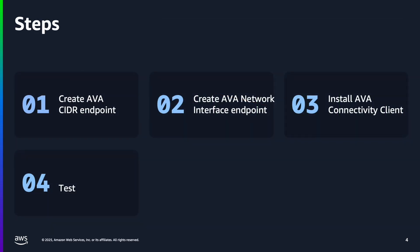This is an overview of the steps. The first step is to create the AWS Verified Access, or AVA, endpoint. You can choose to use the CIDR range endpoint, or the network interface endpoint, or both. After the endpoints are configured, you then download the Connectivity Client to your laptop and configure it to access your AVA instance. Finally, you test to make sure you can access the FSx file share.